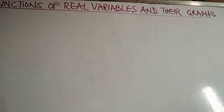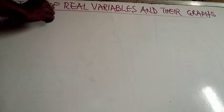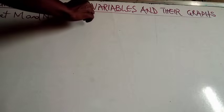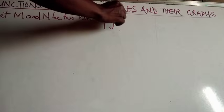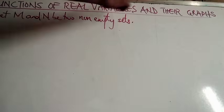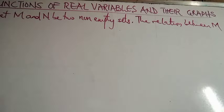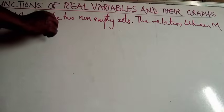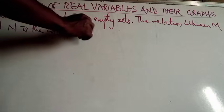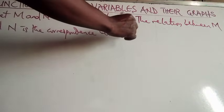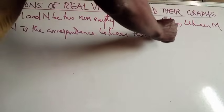Now, we begin with the definition of relations. What do we mean by relations? Let M and N be two non-empty sets. The relation between M and N is the correspondence between their elements.